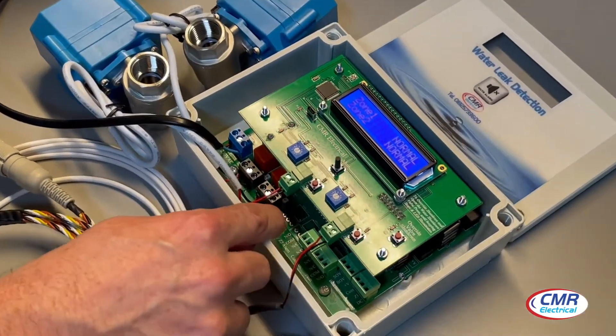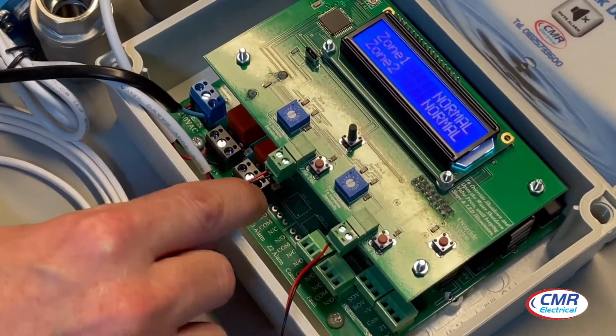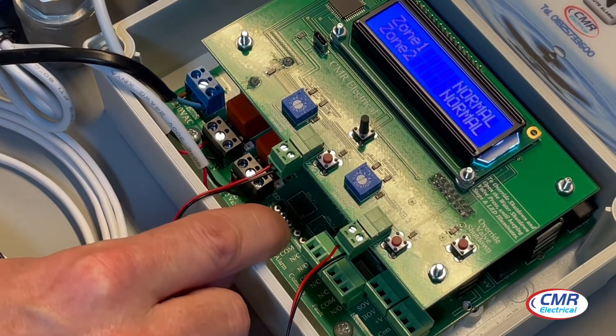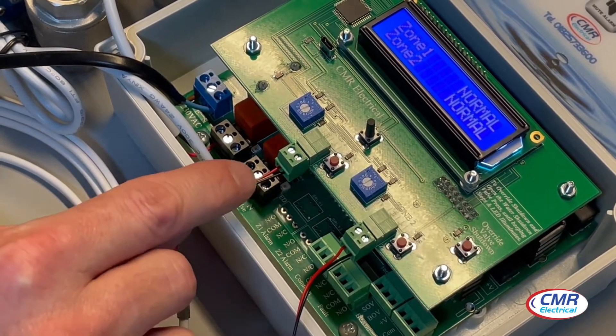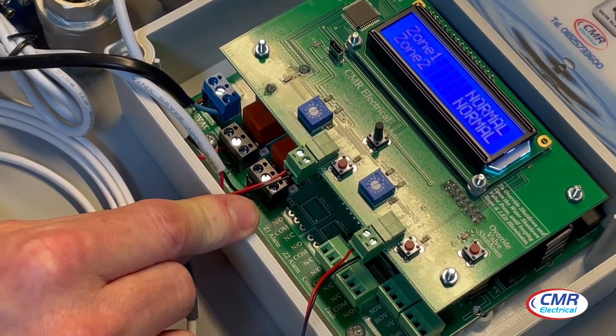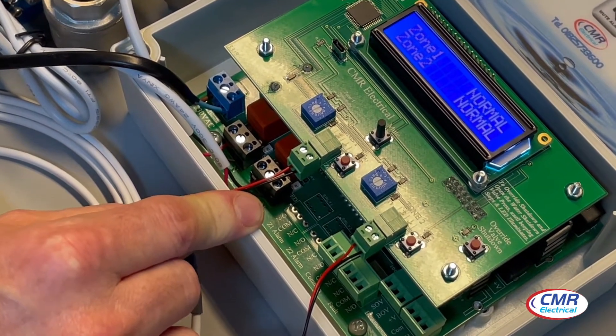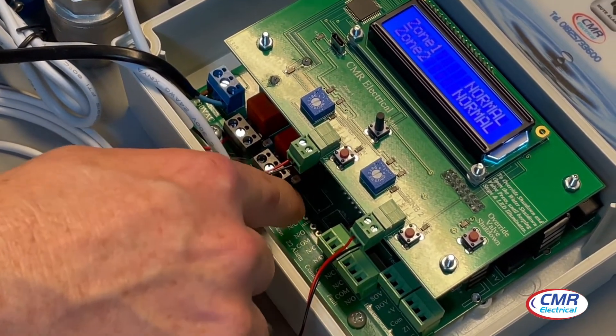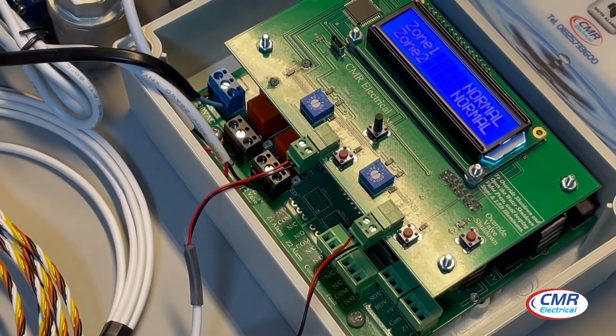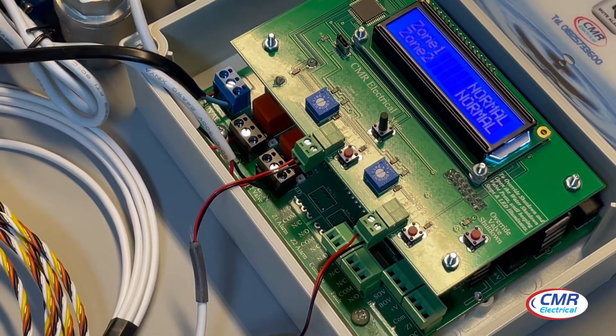Moving along, if fitted, another optional extra: you can have individual volt-free contacts per zone. If you want to connect it to a BMS system and have the BMS system know which zone has gone into alarm, you have these fitted. Again, it's a little greenway terminal block on there, and it's a volt-free contact.